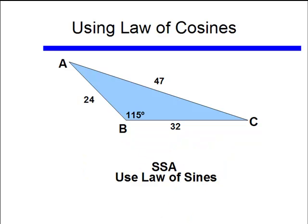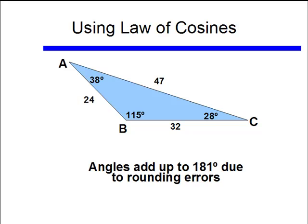Now that I have that third side, I can come up with an SSA arrangement, either 47, 32, and 115 degrees, or 47, 24, and 115 degrees. That's a side side angle, and I can use a law of sines to do that. I'm not going to go through using the law of sines, but I am going to give you the answers, in case you'd like to do the work on your own.